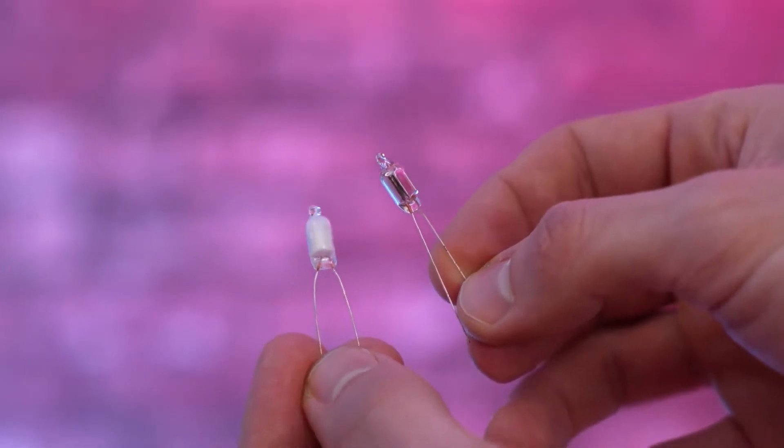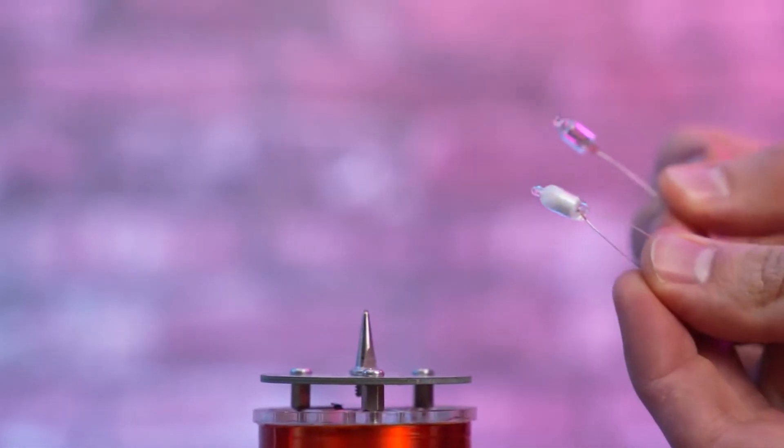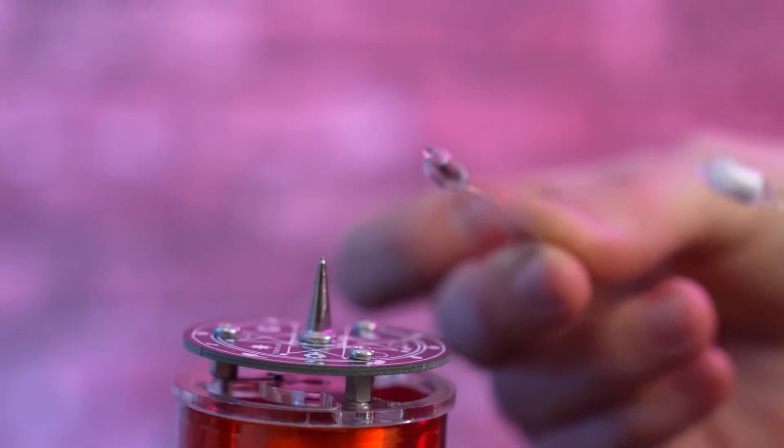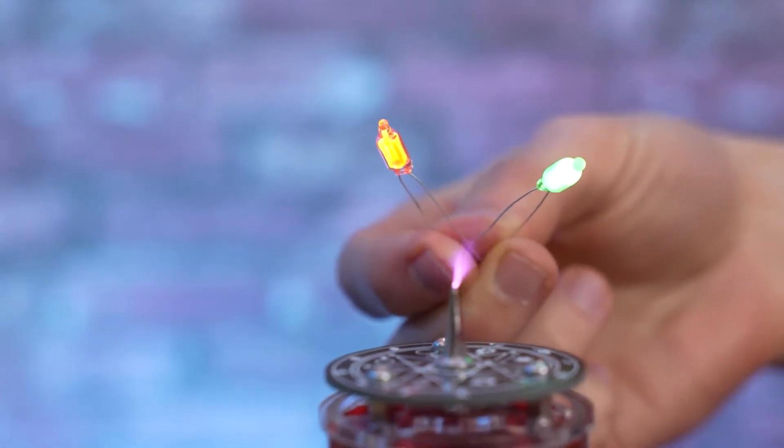Now it's time for a little experiment. Let's take those diodes that are included in the package and bring them closer to our Tesla coil. The coil ionizes the air around, and whoa, the diodes light up.